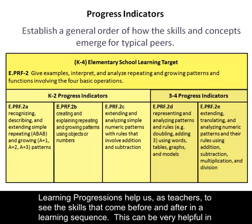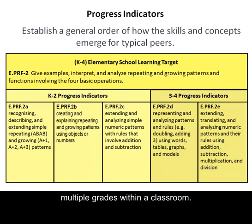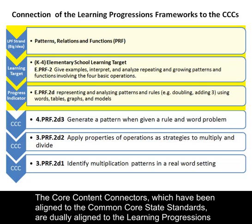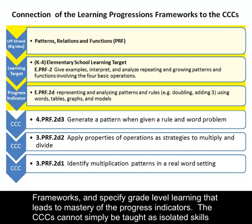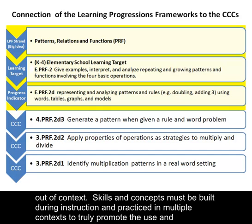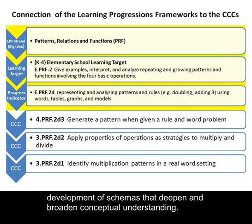Learning progressions help us as teachers to see the skills that come before and after in a learning sequence. This can be very helpful in analyzing student learning to identify what is missing or needs to be strengthened and supported, as well as planning instruction across multiple grades within a classroom. The core content connectors, which have been aligned to the Common Core State Standards, are duly aligned to the learning progressions frameworks and specify grade-level learning that leads to mastery of the progress indicators. The CCCs cannot simply be taught as isolated skills out of context. Skills and concepts must be built during instruction and practiced in multiple contexts to truly promote the use and generalization of mathematical concepts. Using the LPF as a guide helps to identify how the CCCs are pulled together to allow for the development of schemas that deepen and broaden conceptual understanding.